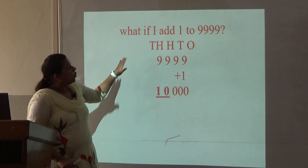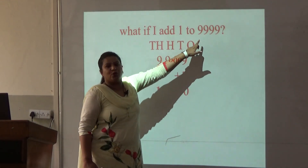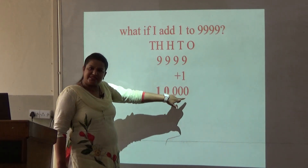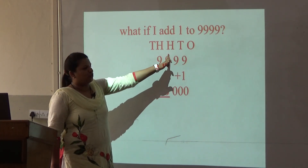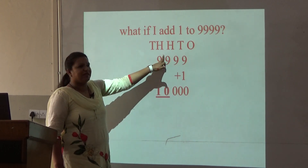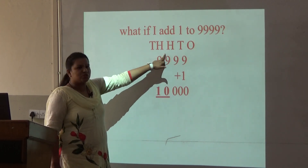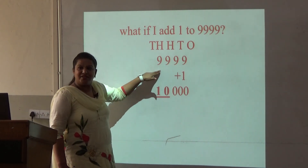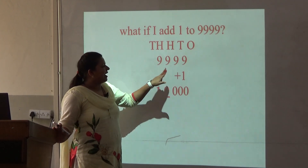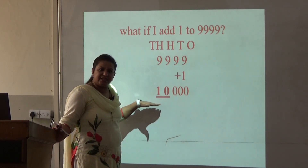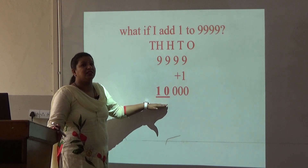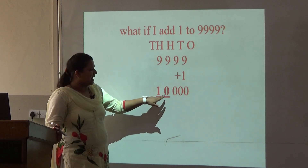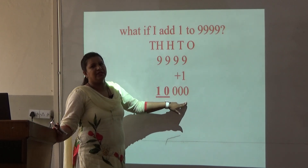Now what if I add 1 to 9,999? Again 9 plus 1 is 10, 1 will be carried over. 9 plus 1 is 10, 1 will be carried over. 9 plus 1 is 10, it will be carried over. Now after the 4-digit greatest number, when we add 1 to it, we get the 5-digit number, that is 10,000. So 10,000 has 1 at the 10,000's place and there are 4 zeros in 10,000.